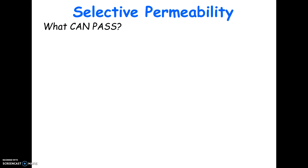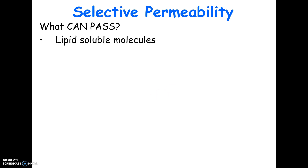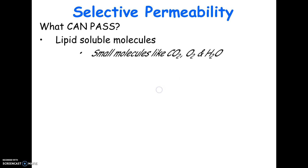Picking up from last time, we've talked about the structure of the cell membrane. Let's talk about what can and cannot pass through. The cell membrane is selectively permeable — some things can pass and some can't. What can pass through are lipid-soluble molecules because the membrane is mostly phospholipids, so things that dissolve in lipids can pass through.